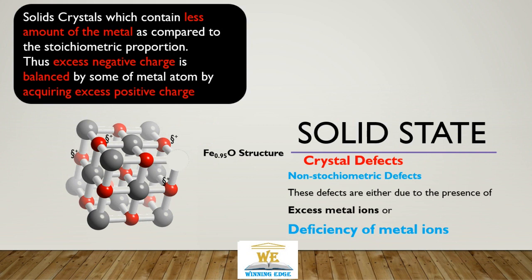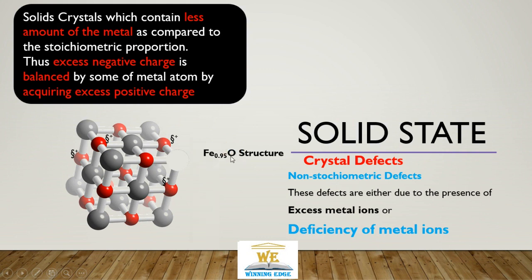For example, iron oxide: in this iron oxide, a few metal atoms are lost. The proportion is not exactly 1 — it is 0.95 iron atoms to 1 oxygen atom. The 0.05 lost iron atoms were Fe²⁺. To balance the two units of negative charge, a few iron atoms further oxidize to the Fe³⁺ oxidation state.